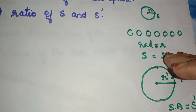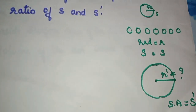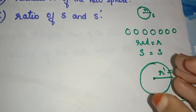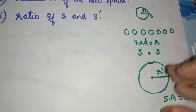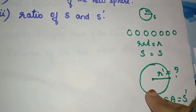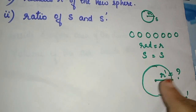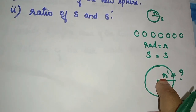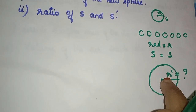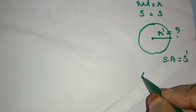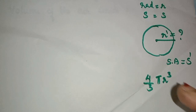Let's work with volume. We get R' using the volume formula. The formula for volume of a sphere is 4 by 3 pi r cube.